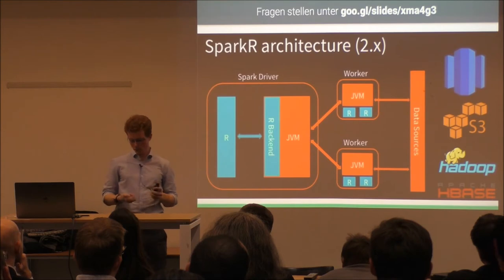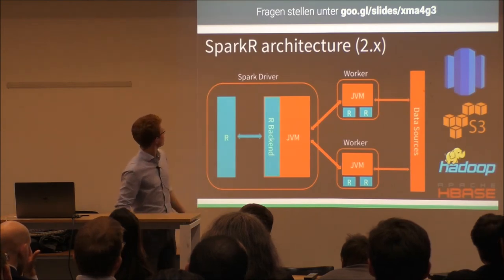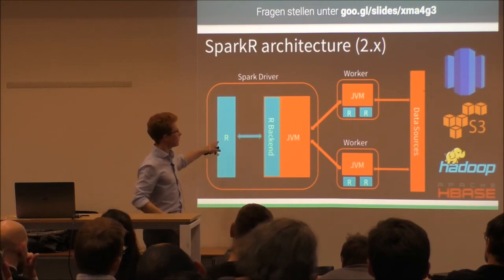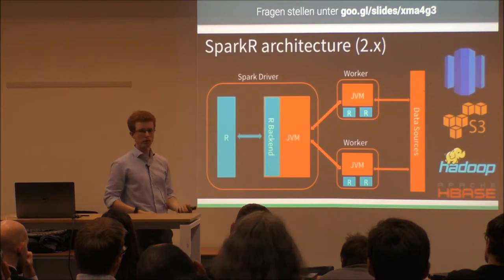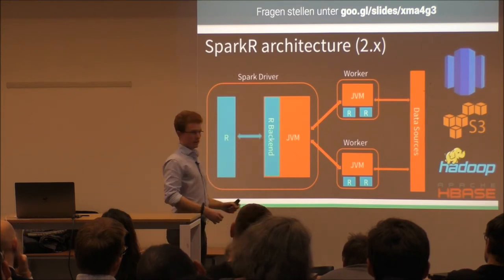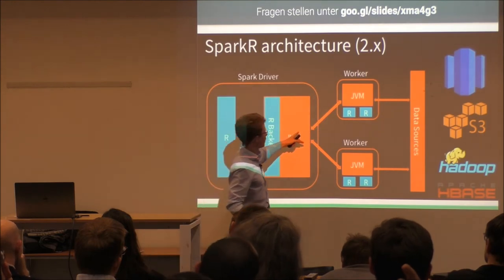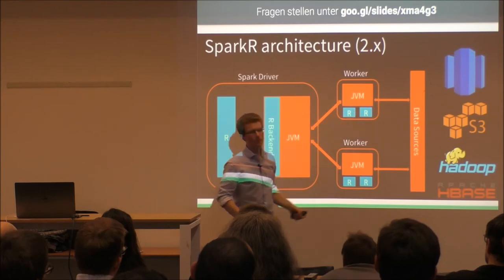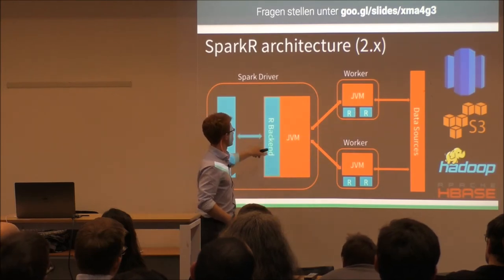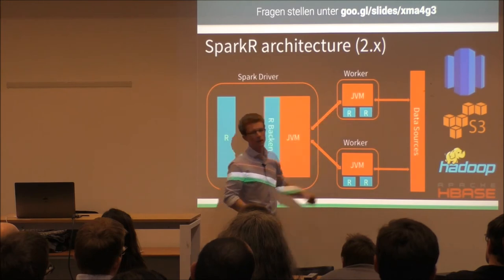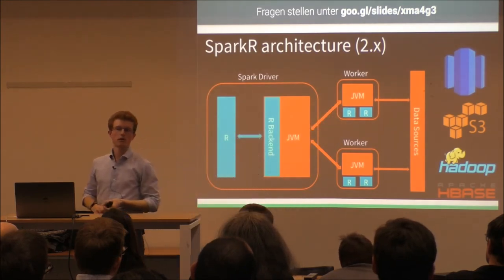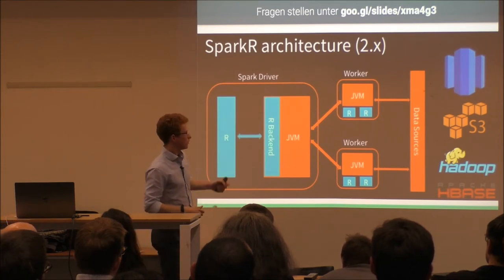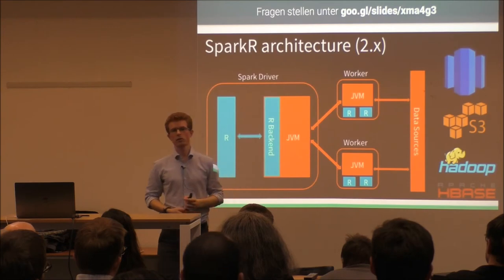Before the demo, let's look at the architecture. You start your R session locally and tell Spark to do a job for you. Commands and maybe some data traverse to Spark, which fans out the computation to all the workers and executes your R code locally on each. With each of those arrows, serialization occurs, which may cost some performance and can produce nested exceptions that are harder to debug.